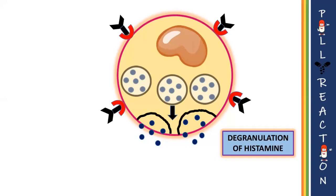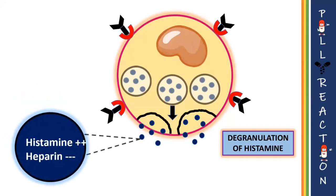In the mast cells, positively charged histamine is held complexed with negatively charged heparin. As a result, positively charged histamine attracts negatively charged heparin, stabilizing the complex within the granule.